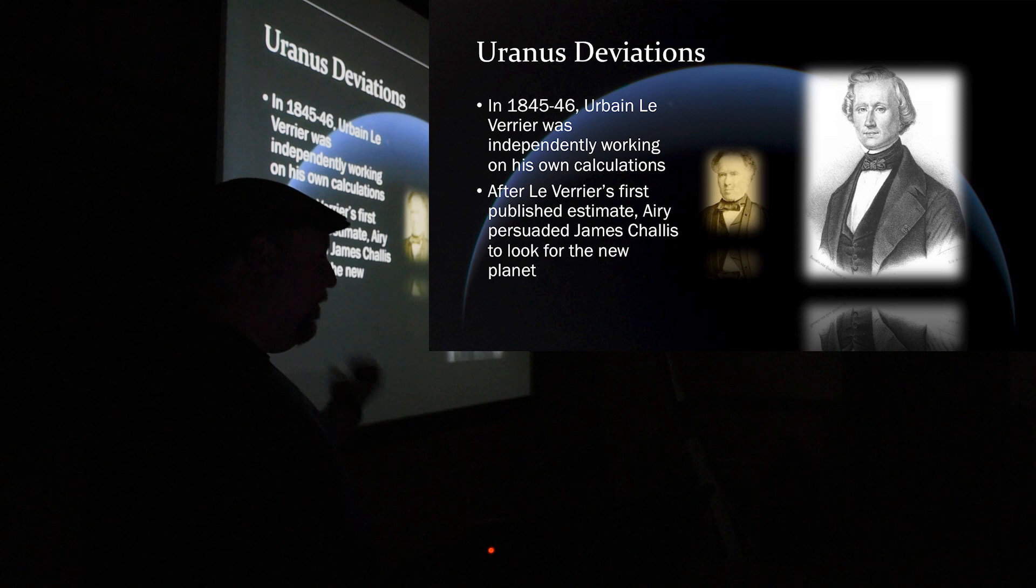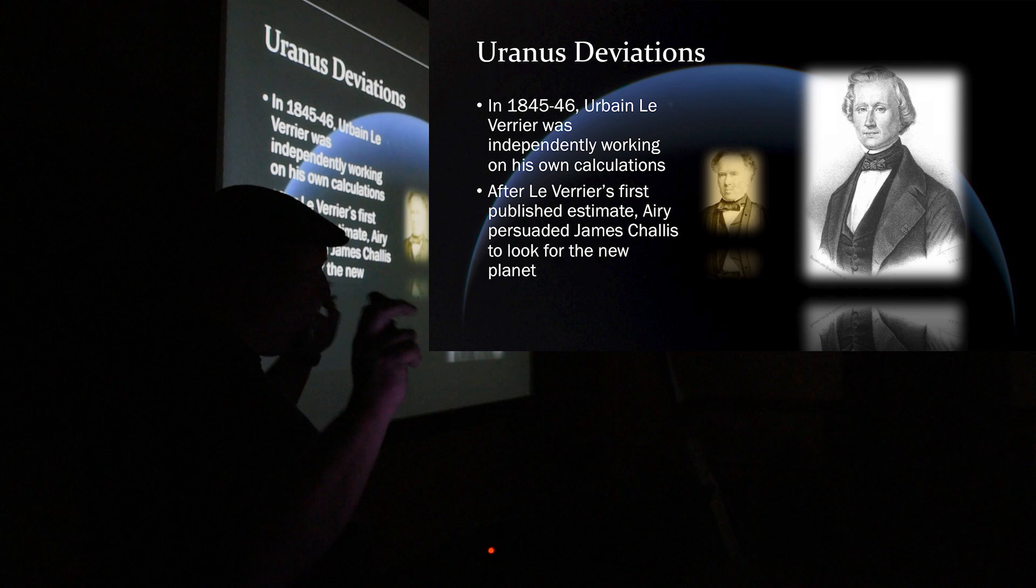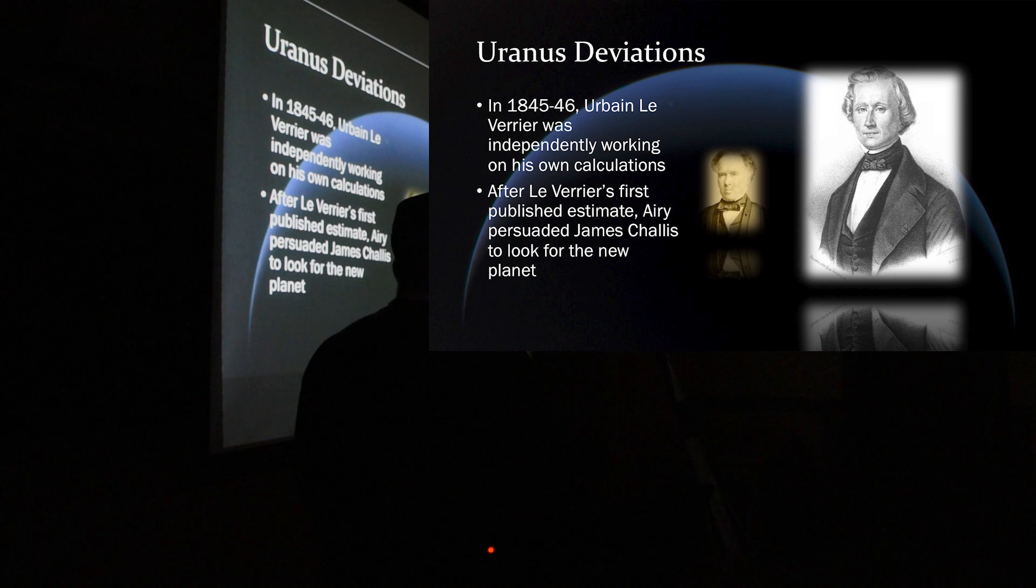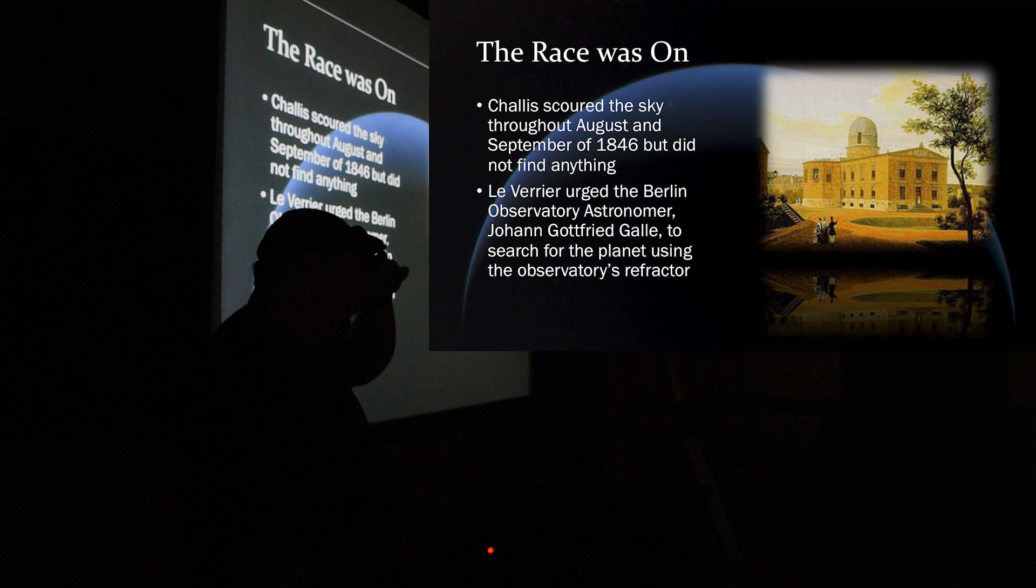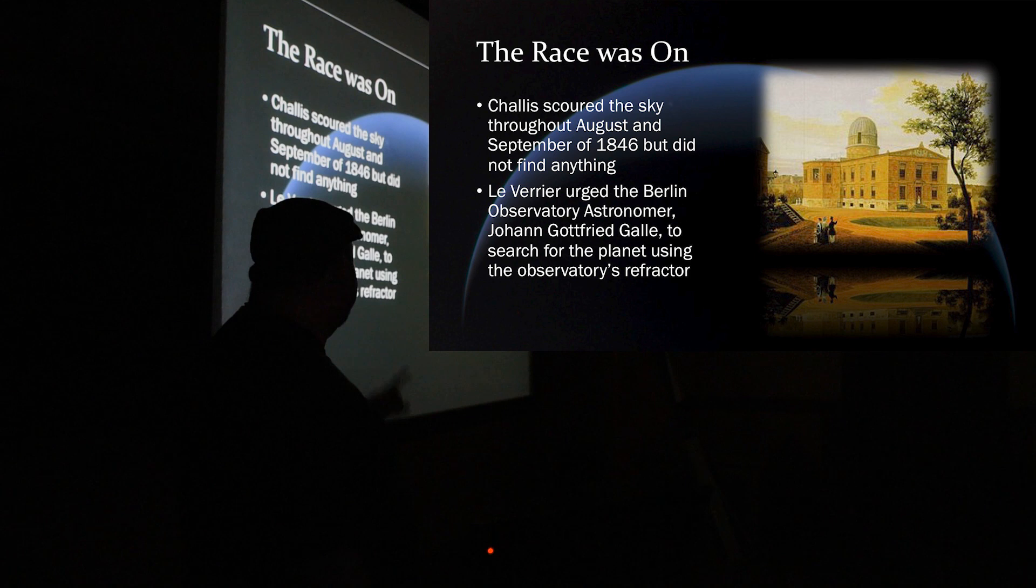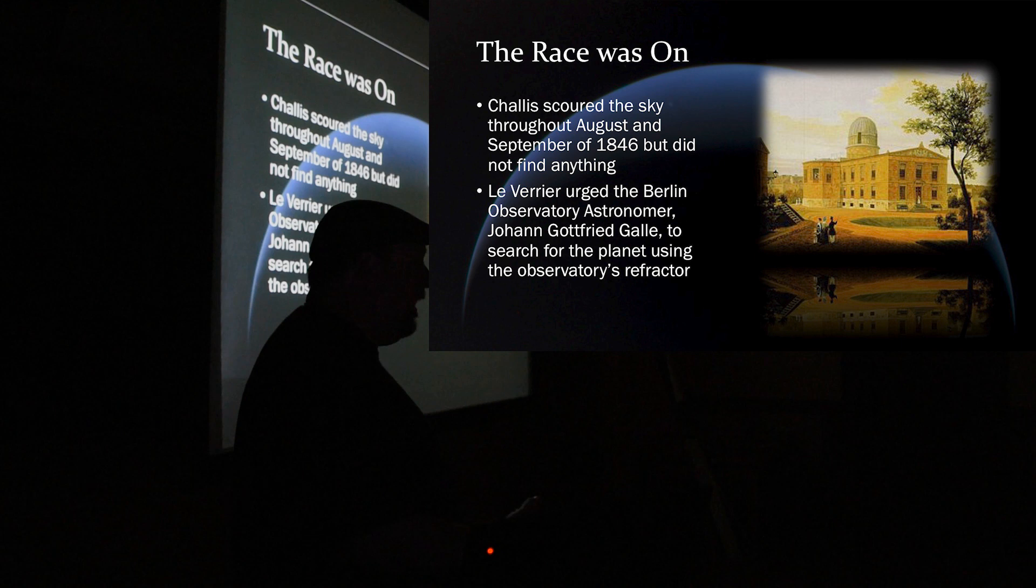The French didn't like the English. The English didn't like the French. So, there was a race, a space race, if you will, to try to predict and discover where this elusive planet was going to be. So, as Challis is sitting there trying to find this planet, using Adams' data, Le Verrier urged the Berlin Observatory, the director of the Berlin Observatory, Johann Gottfried Galle, to use the observatory's refractor to try to find this planet.